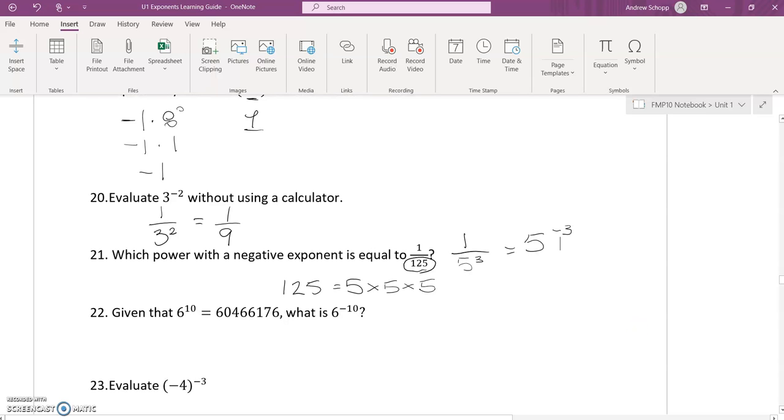Knowing that we're looking for 6^-10, I know that that is equivalent to 1 over 6^10. And since I know what 6^10 is, I could rewrite that as 1 over 60,466,176. So 6^-10 is equivalent to 1 over that value.